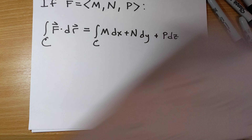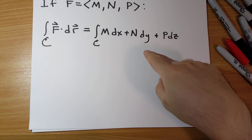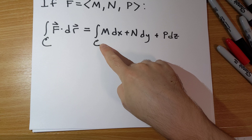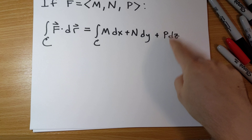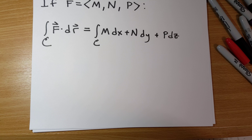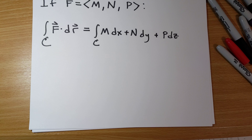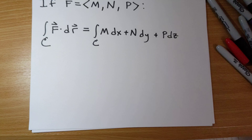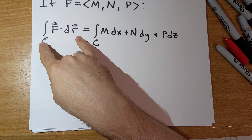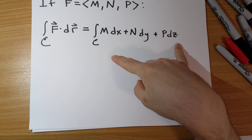The punchline — this is the slide that really has the alternate notation — is that if you ever see an integral written as the integral over C of M dx plus N dy plus P dz, where M, N, and P are all functions potentially of x, y, and z, this really means the integral of f dot dr where f is ⟨M, N, P⟩. We can evaluate it in exactly the same way as before.